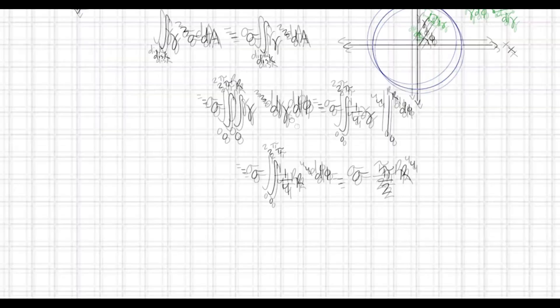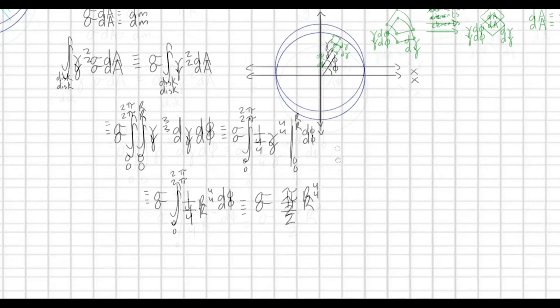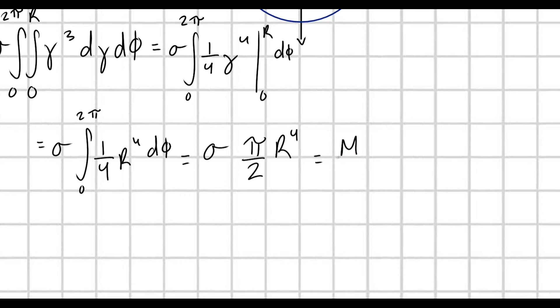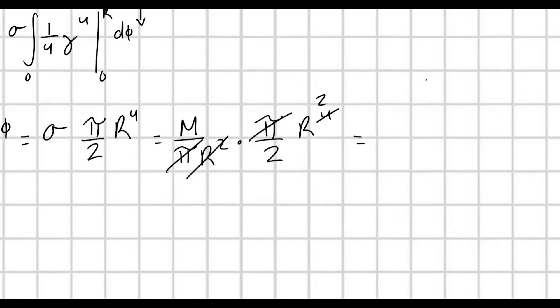So, lastly, we just need to plug in for sigma. And, I already noted at the very beginning that sigma is equal to m over pi r squared. So, m over pi r squared times pi over 2 times R to the fourth. Pi's cancel. This is going to cancel out. Give us an R squared. And, we derive our final result, which is that the moment of inertia of this disk. Whoops! I'll use this with an arrow. The moment of inertia of our disk is equal to m r squared over 2. Fantastic!